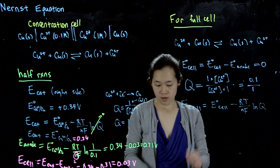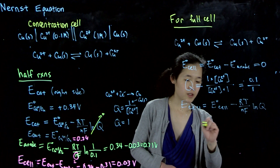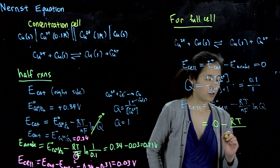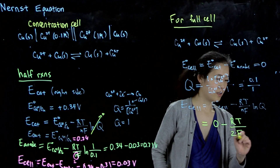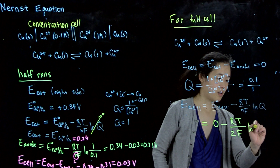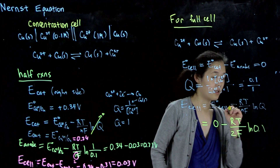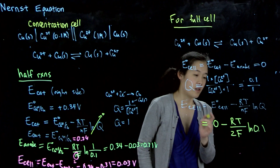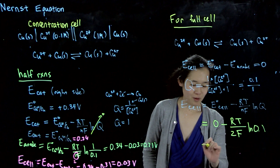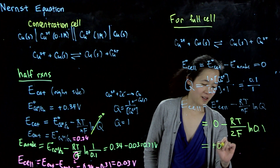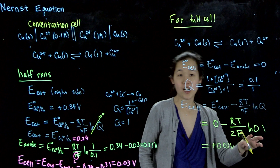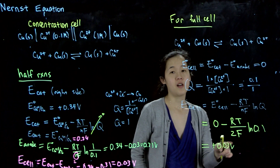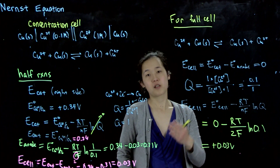Our final cell potential is E_cell equals 0 minus RT over 2F times log(0.1). Since the log of a number less than 1 is negative, and we have a negative sign in front, overall this gives a positive number, approximately 0.03 volts. So we still get a positive cell potential, and this reaction will be spontaneous.